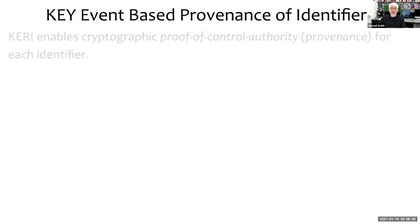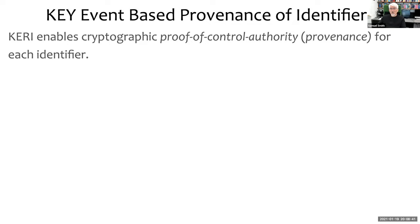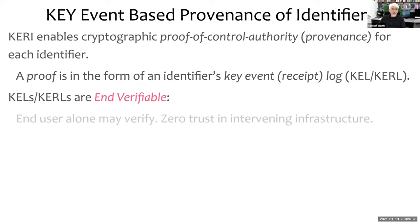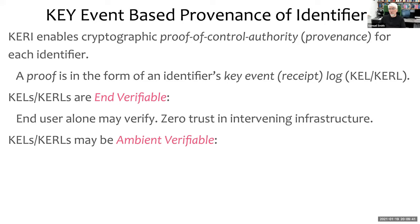In KERI, the goal is a cryptographic proof of control authority for each identifier. The proof is in the form of an identifier's key event receipt log or key event log, depending on whether it's a public or private identifier. For a private peer-wise identifier, you don't have receipts from witnesses — just signatures from the controller itself. For a public identifier, you can add additional layers of protection with witnesses. The core idea is that if you have a copy of a log, you can verify all the signatures and hash chaining in it and know the log is internally consistent, so you don't need to trust any intervening infrastructure. The goal is to eventually reach ambient verifiability.